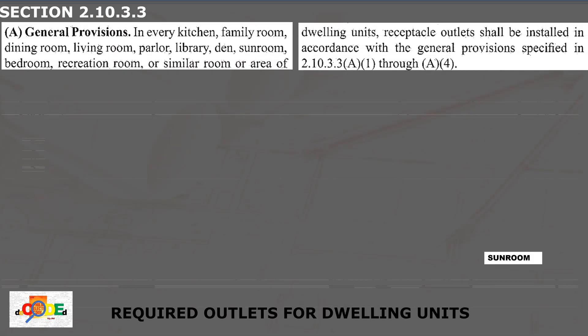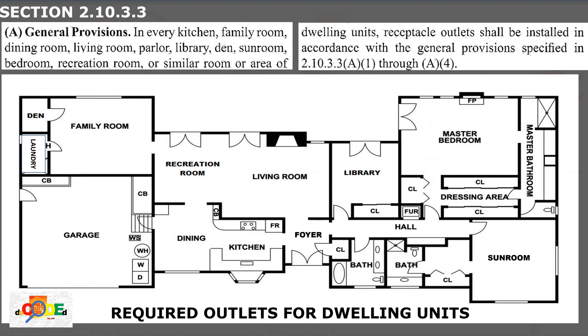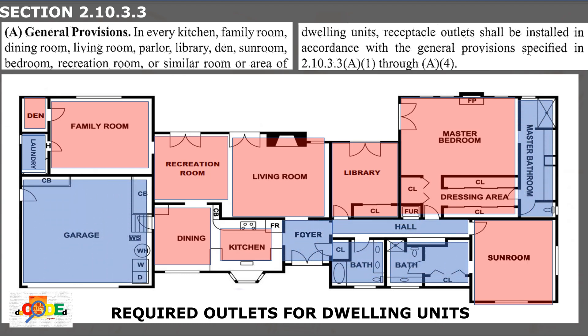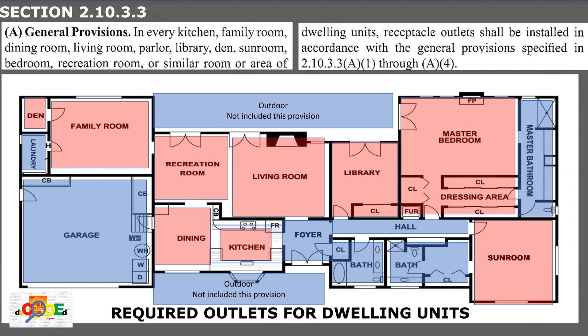In paragraph A, receptacle outlets on fixed spacing must be installed in every room of a dwelling unit such as the kitchen, family room, dining room, living room, parlor, library, den, sunroom, bedroom, recreation room, or similar room or area. Areas not specified — such as laundry area, hallway, foyer, bathroom, garage, outdoor, balcony, porch — and also countertops and work surfaces, have different rules for receptacle outlets.